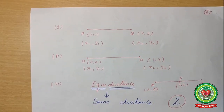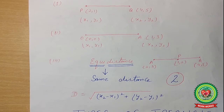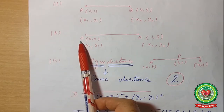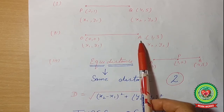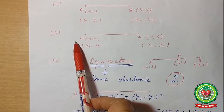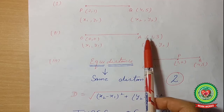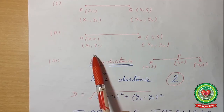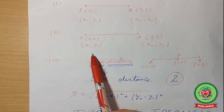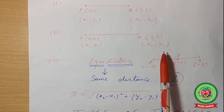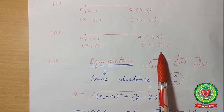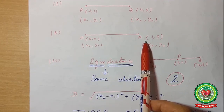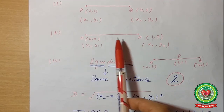Second, we covered the origin concept — when one point is the origin and one is the given point. The origin point is (0, 0) and a point is, say, (1, 3). Assigning x1, y1 and x2, y2 respectively and applying the distance formula between O and A, we can find the distance OA.